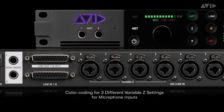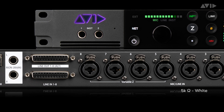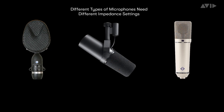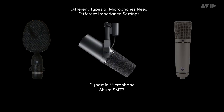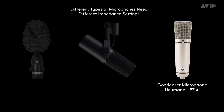The rear panel mic inputs 5 to 8 have three different settings that are colour-coded and switchable from the Carbon front panel. These are 5 kiloohms white, 50 kiloohms cyan, and 1 kiloohm fuchsia. This is particularly useful when switching between different types of microphones such as ribbon, dynamic, or condenser.